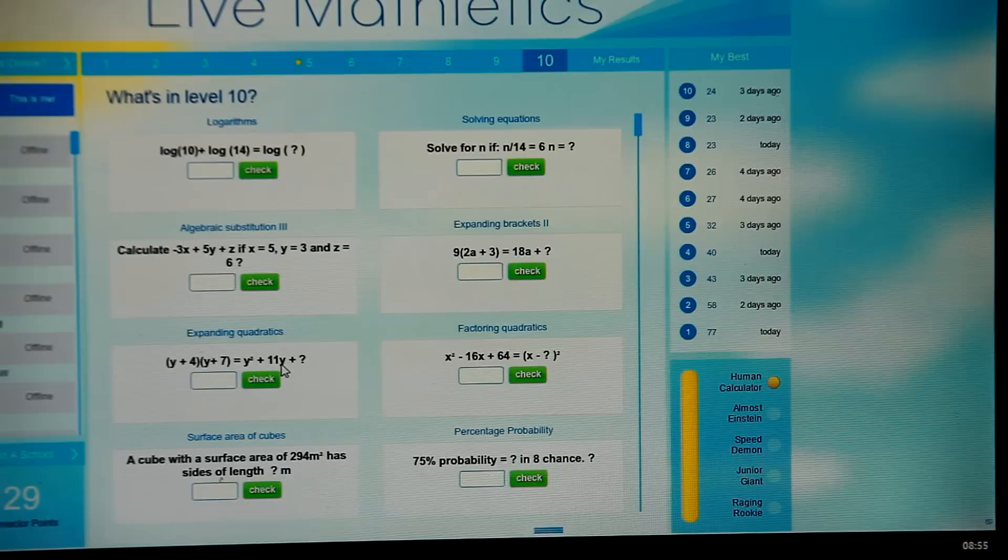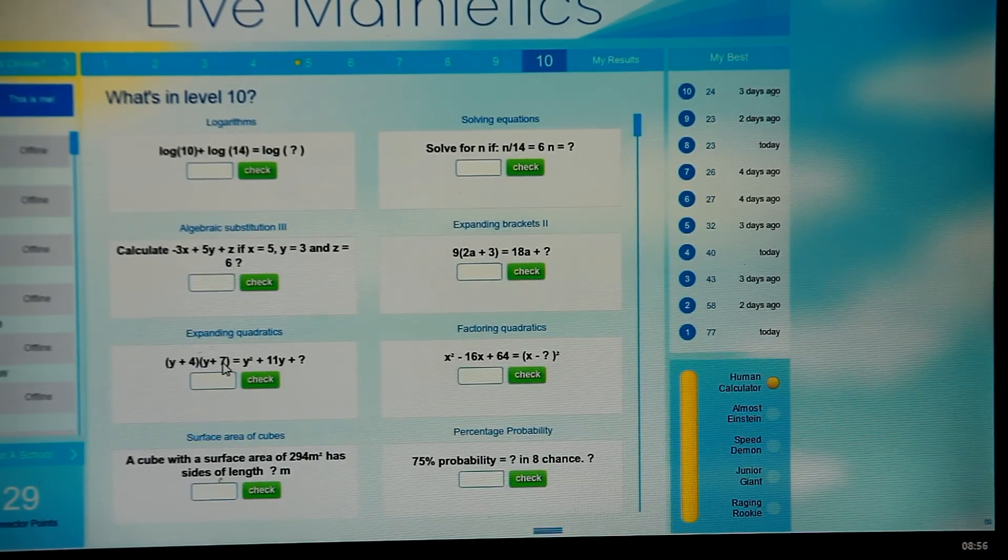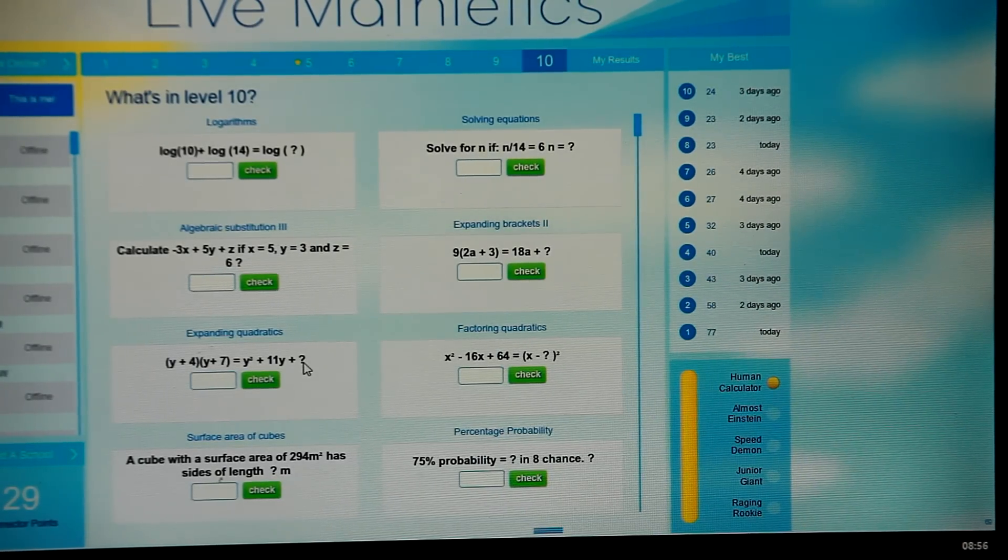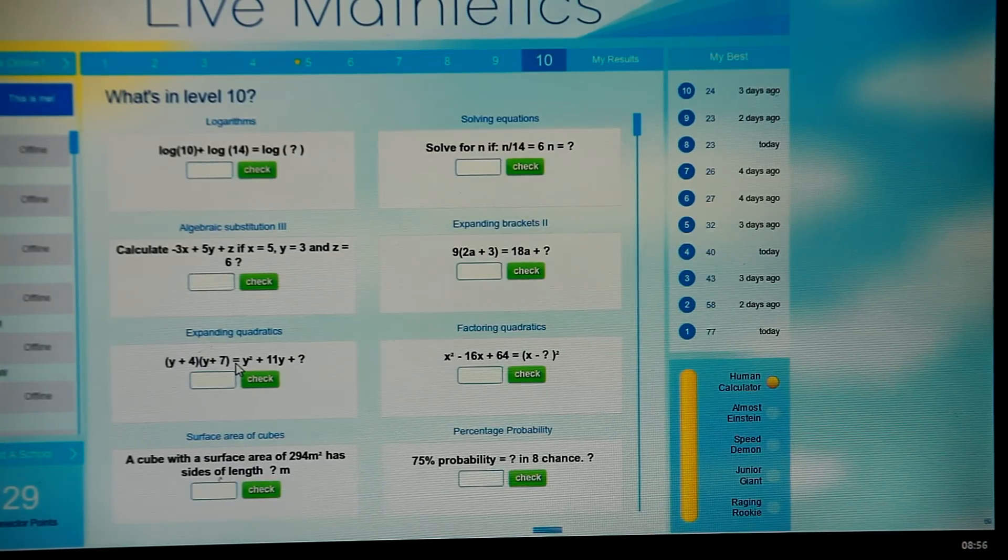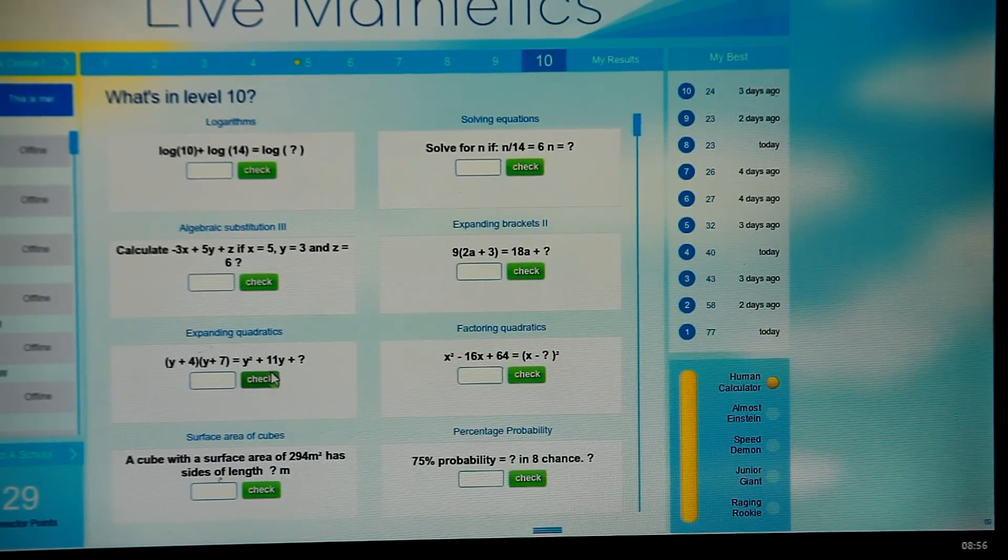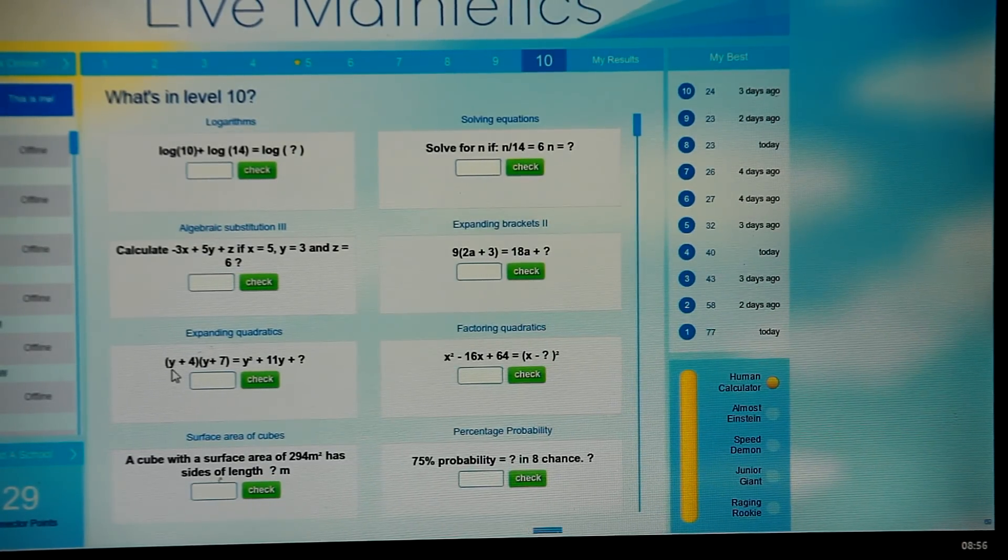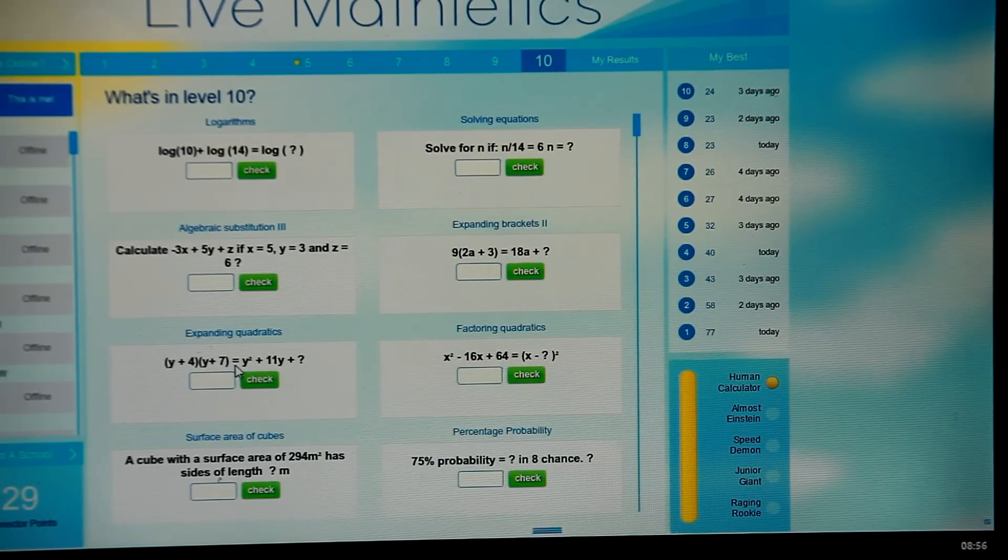But we don't have to go through any of those calculations to answer this question because the final term comes from the lasts, which will just simply be 4 times 7, which is 28. So look where the question mark is. If the question mark is at the end, all you've got to do is look at the lasts. If it was in here, you look at the firsts. If it is in the middle, then you have to add together the outers and inners, and be careful if there's any negative signs, you need to take away those products.